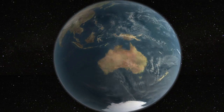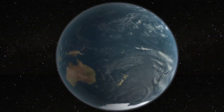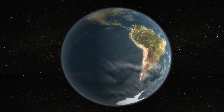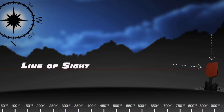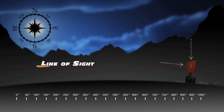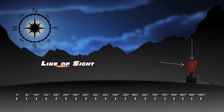Coriolis errors are caused by the Earth's rotation. When a bullet is fired from a gun, it will take a certain amount of time to reach the target. While it is traveling, the target is dropping or rising according to the Earth's rotation.